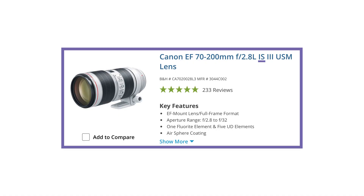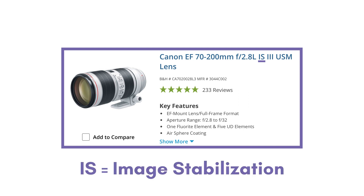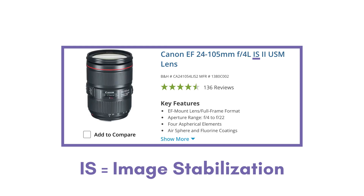Next, you may see IS, which stands for image stabilization. That's letting you know that the lens has a built-in image stabilization feature. This could be important to you if you are shooting handheld and want that extra help to make sure your images don't look blurry or your video footage doesn't look too shaky.